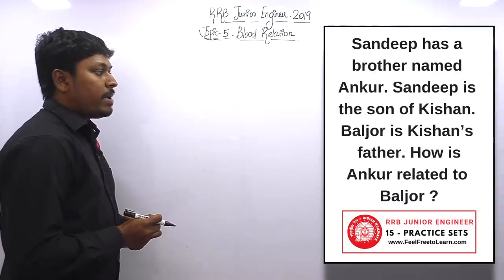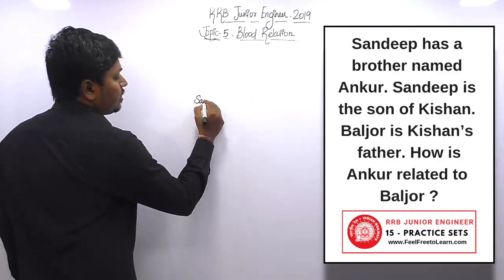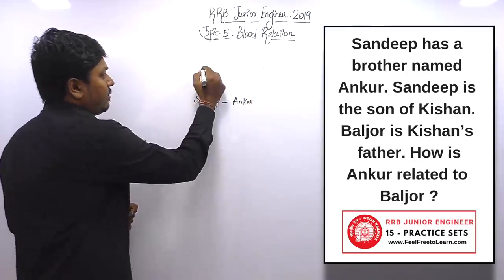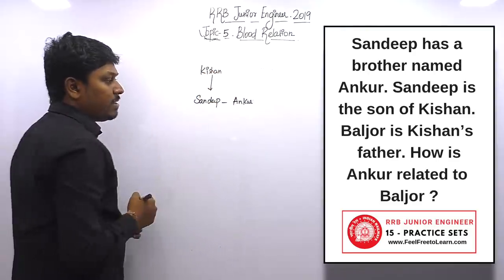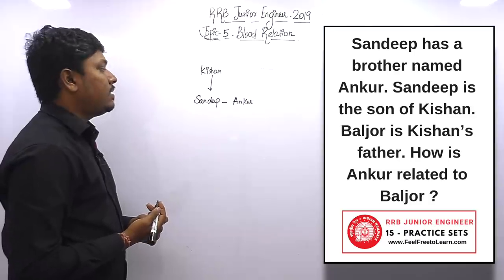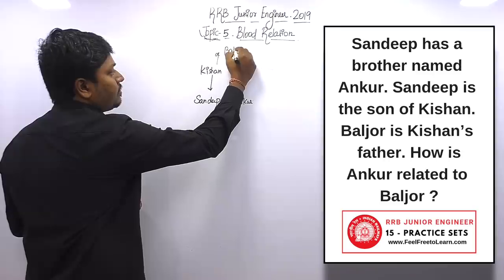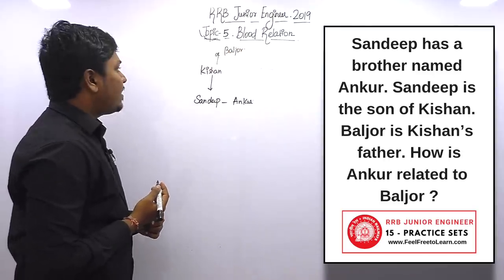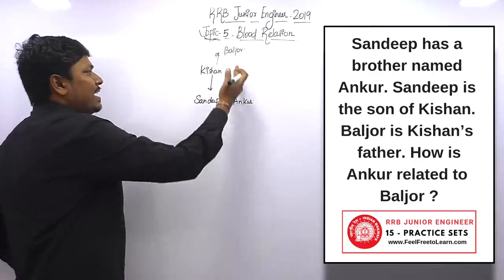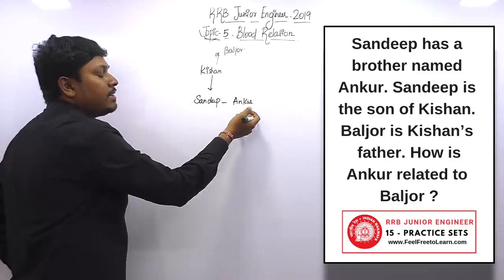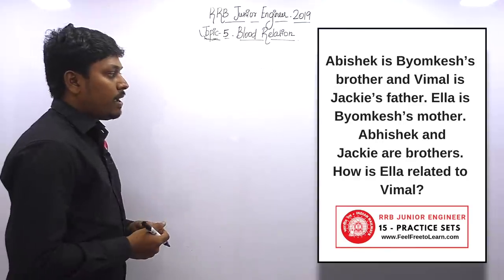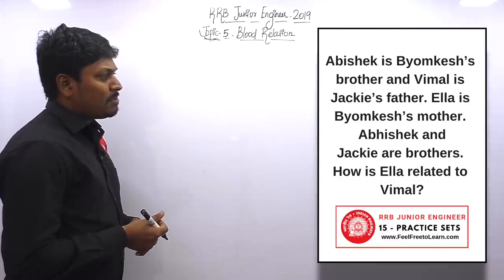Question number seventeen: Sandeep has a brother named Ankur. Sandeep is the son of Kishan. Balijar is Kishan's father. The question is: how is Ankur related to Balijar? From Balijar, Kishan is the son, and Kishan's son is Ankur — so Ankur is Balijar's grandson. The answer is grandson.